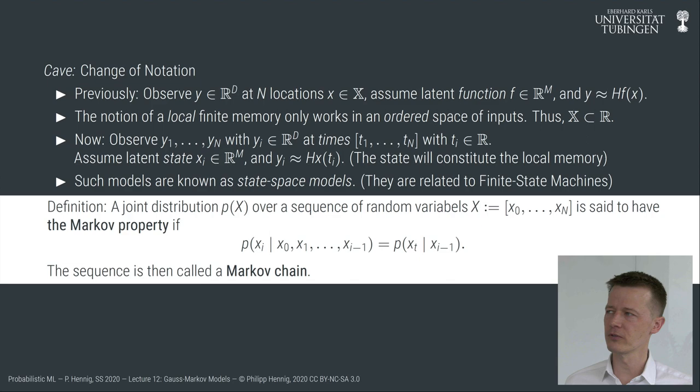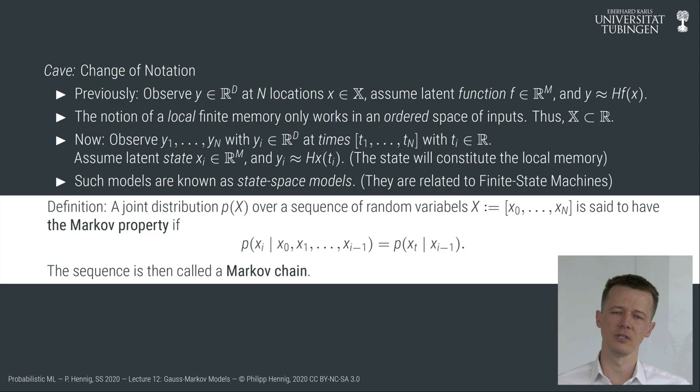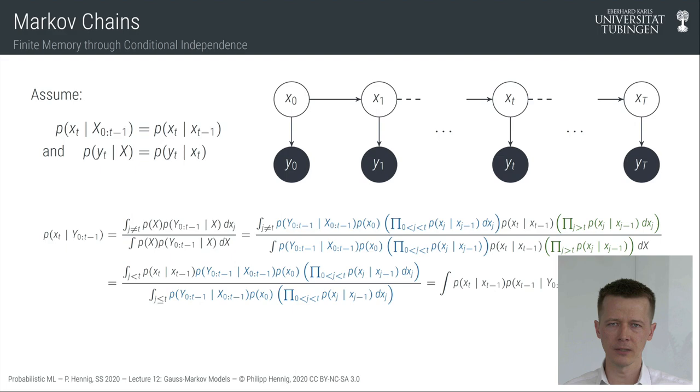Such sequences of objects xi distributed according to this factorization structure are called Markov chains. What I'd like to do now is think about what this kind of structure actually implies for our inference algorithm. Interestingly, for the moment I'm not going to make any assumptions about Gaussianity or the shape of the probability density function. I will assume there is a density, but not what shape it takes.